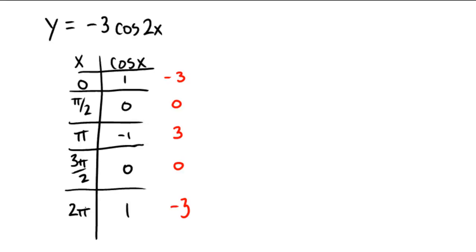For the x, we don't multiply — we divide. So I'm going to divide everything by the number 2. 0 divided by 2 is 0. π/2 divided by 2 is just π/4. Dividing π by 2 gives 3π/4. And then 2π divided by 2 would just be π. Hopefully you got those numbers for your x-axis.